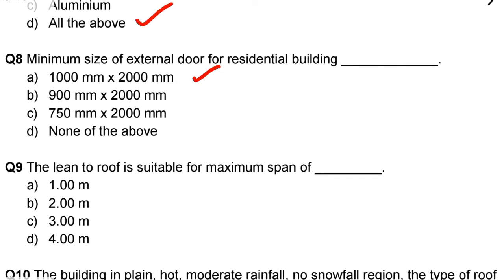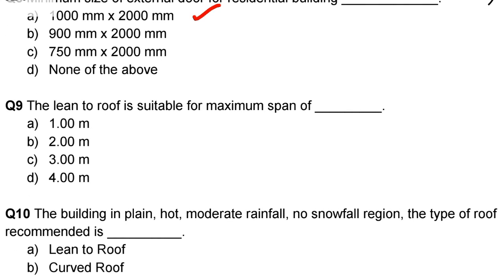Next question: lean to roof is suitable for maximum span of. Option A: 1 meter, Option B: 2 meter, Option C: 3 meter, Option D: 4 meter. The correct answer is option C, 3 meter.